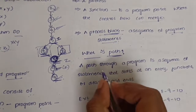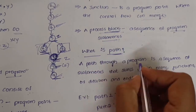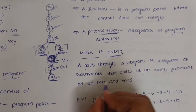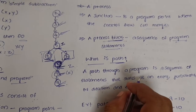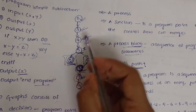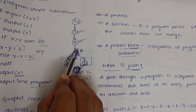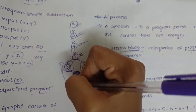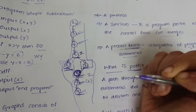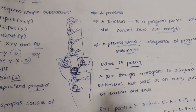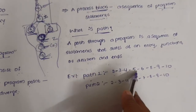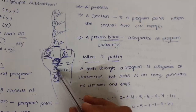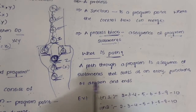A path through a program is a sequence of statements that starts at any entry, junction, or decision. Paths consist of process blocks, junctions, and decisions. In this example there are two paths: path one is 2-3-4-5-6-8-9-10, and path two is 2-3-4-5-7-8-9-10.